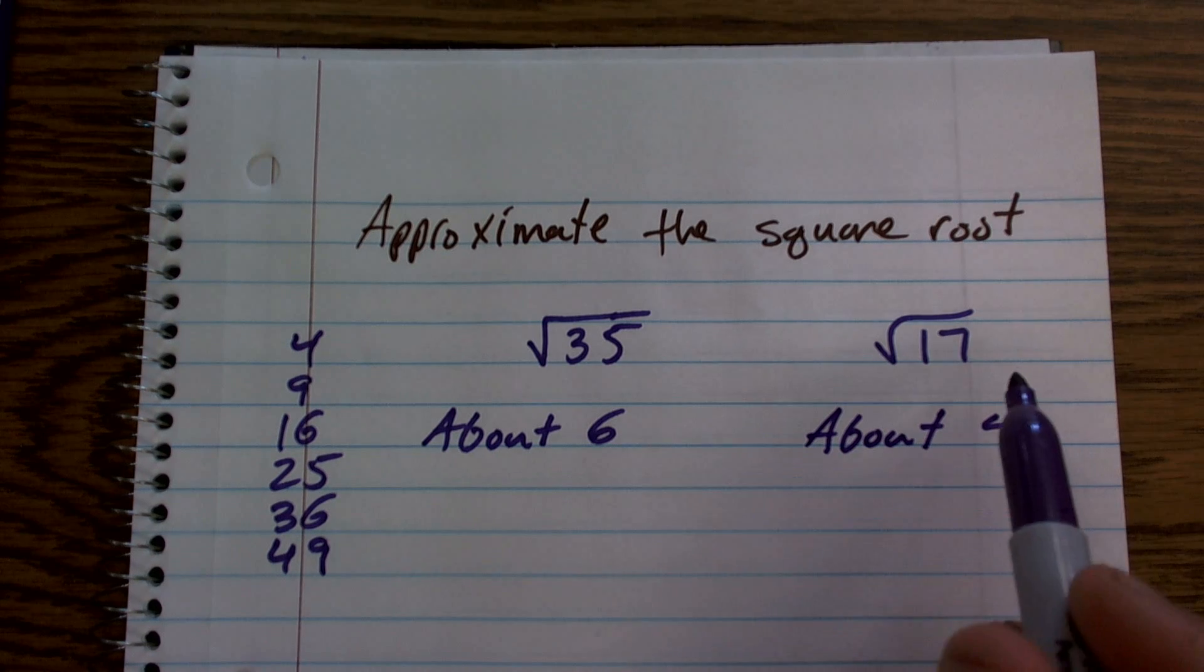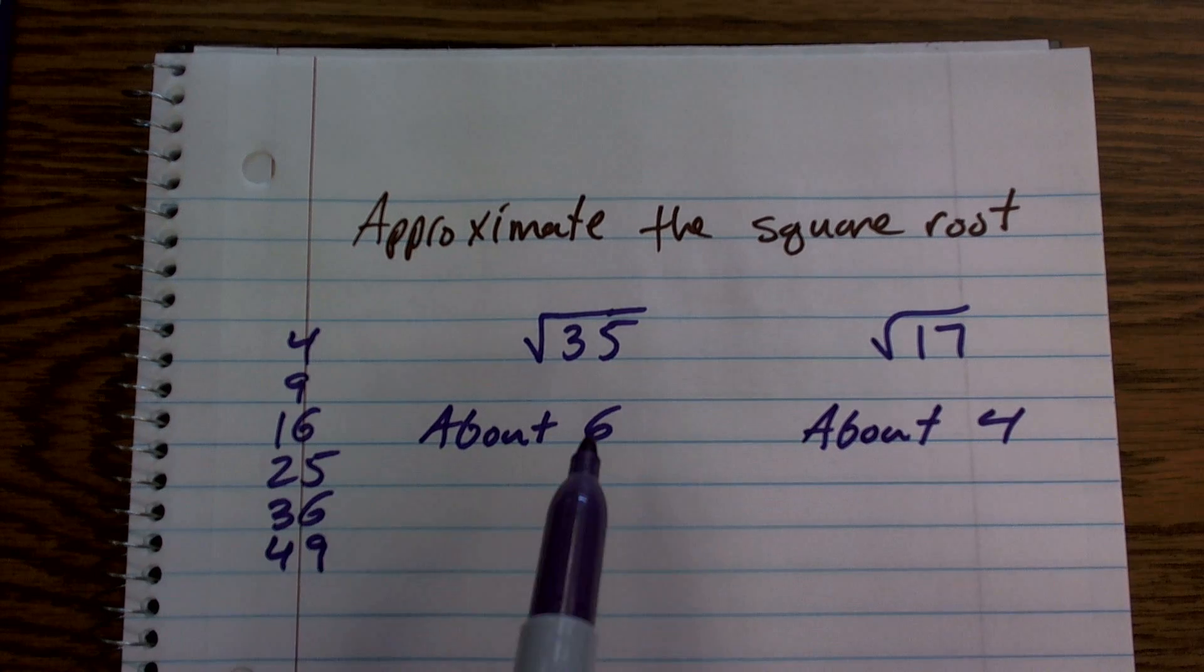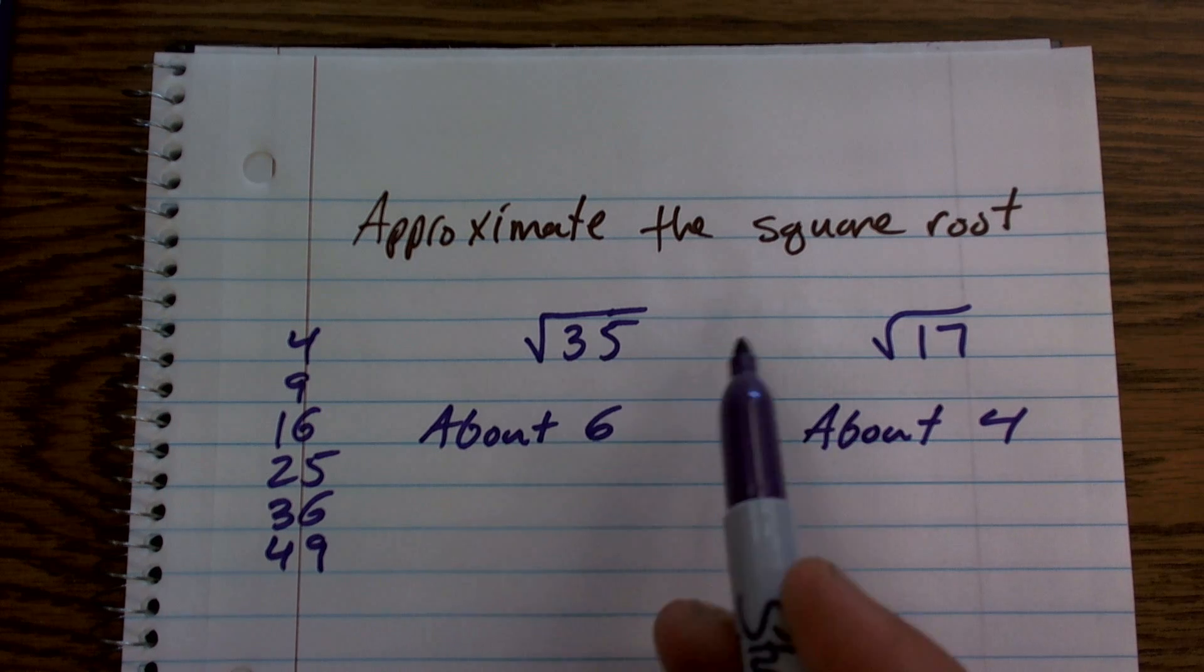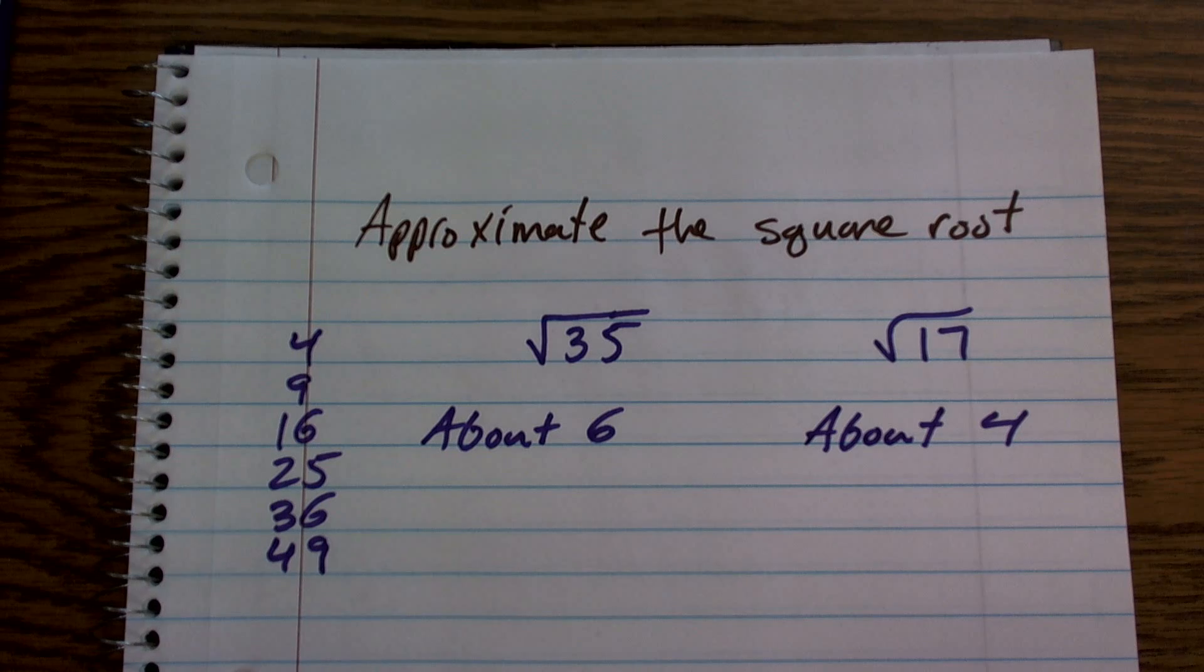The answer is not 4 because we know 4 times 4 is 16. We know the answer here is not 6 because 6 times 6 is 36, but it's very close, so we're going to say about 6 or about 4.